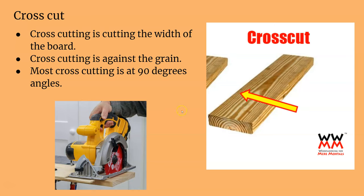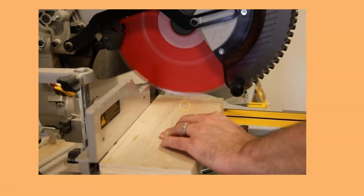Most cross cuts are at a 90 degree angle. Miter saws are exclusively used for multi-faceted cross cuts, so miter saws are cross cutting.